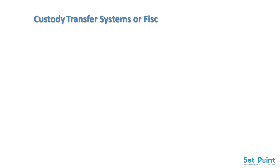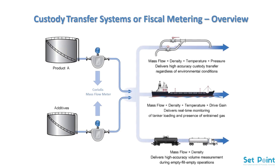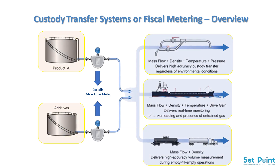Custody transfer systems, or fiscal metering overview. Custody transfer measurement means the transactions where fluids are exchanged between parties. Because of the high value of these goods and the large amount being transferred, it's extremely important that the measurement system is highly accurate, since small errors in measurement can result in large losses in revenue.